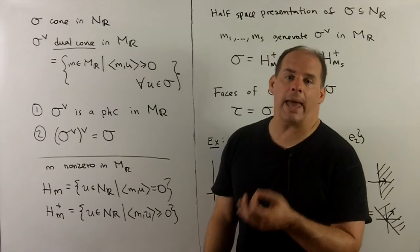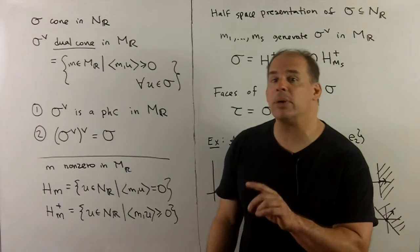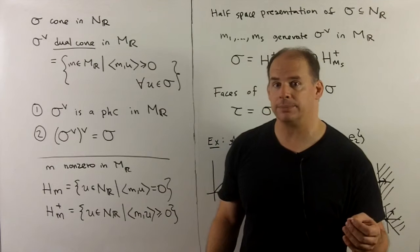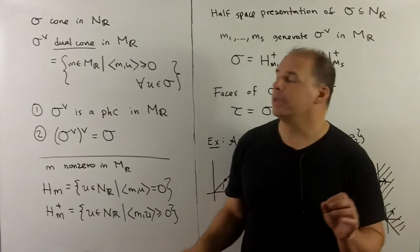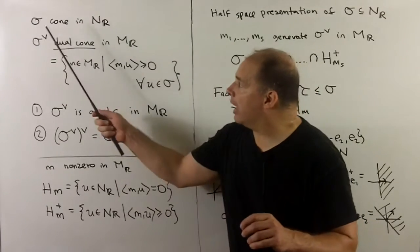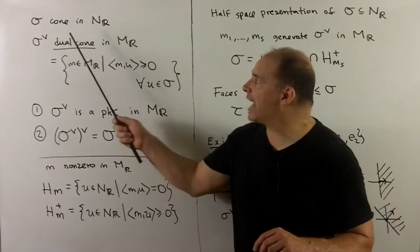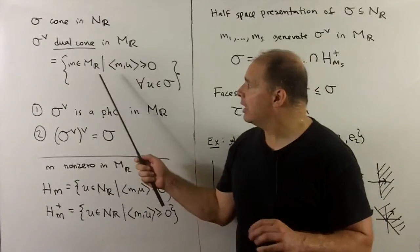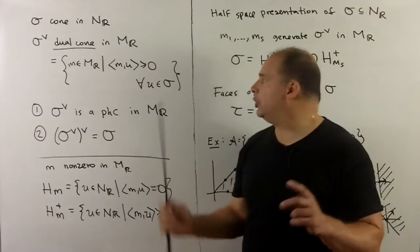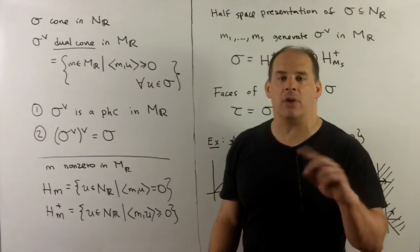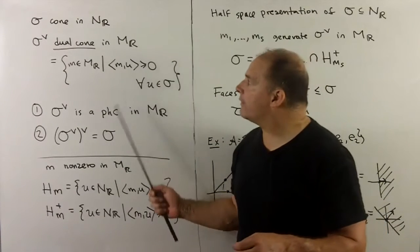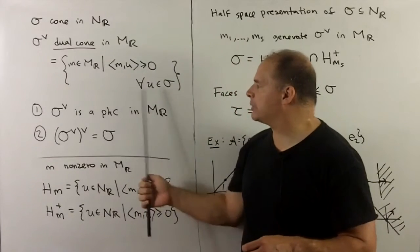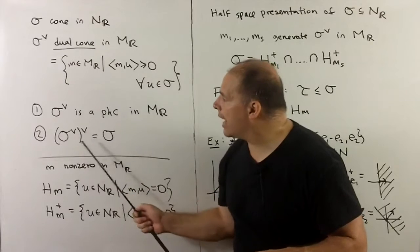One thing we need to keep clear: when do we work in M versus N? M is the character lattice, so there we expect to find function-theoretic data. N, the lattice of one-parameter subgroups, is where we expect to find geometric data. We want to be able to pass between the two, so we need some definitions. If we have sigma, a cone in N sub R, we define the dual cone, sigma-check, in M sub R as follows. We consider all vectors U in our cone, and M must be within 90 degrees of all those vectors. Note there is a corresponding definition for cones in M sub R. Sigma-check is a polyhedral cone in M sub R if sigma is, and if we dualize twice, we get back the original cone.